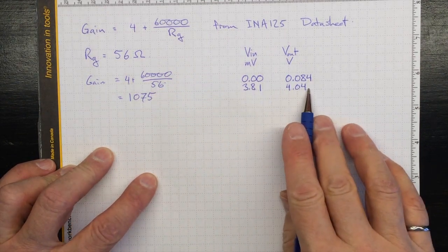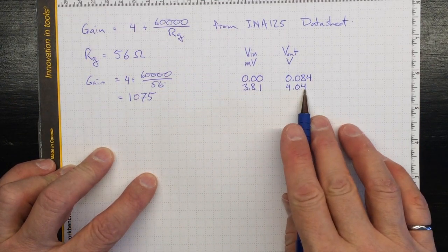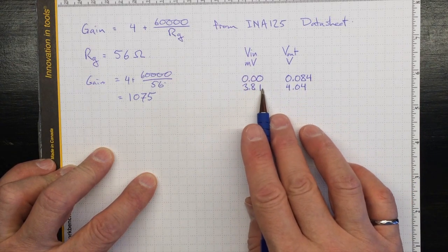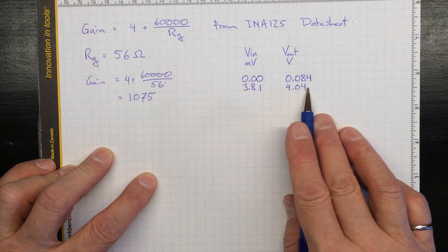So that certainly accounts for what we're seeing, that we're seeing a little more than 1,000 times increase in voltage from 3.81 millivolts up to 4.04 volts.